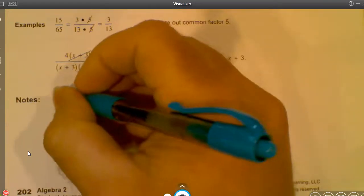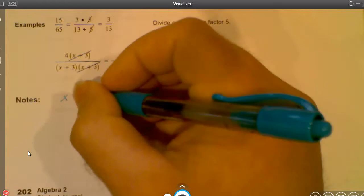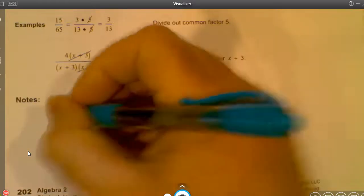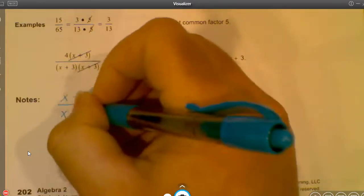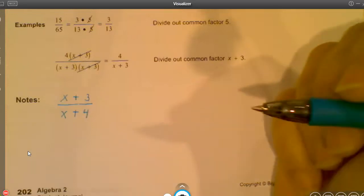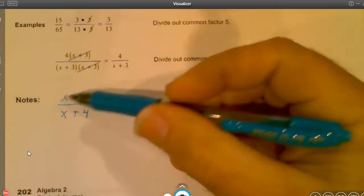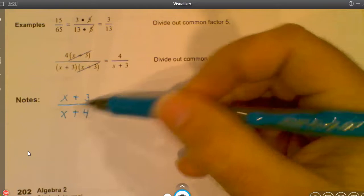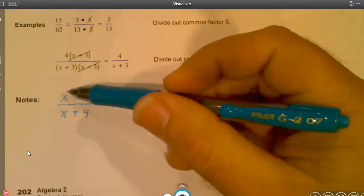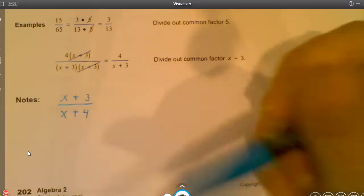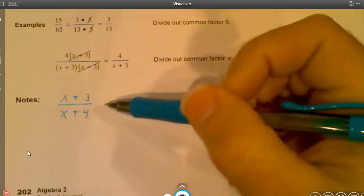The one thing you cannot do is cancel things out if they're being added. So if I had X plus three over X plus four, obviously those are not the same factors. And because these two terms are being added together, I am not allowed to eliminate those X's right there. So that would be a no-no. This is actually as simplified as it can get. So keep that in mind.